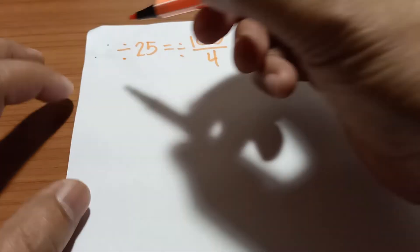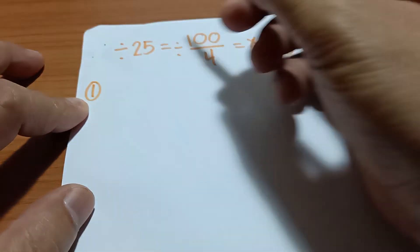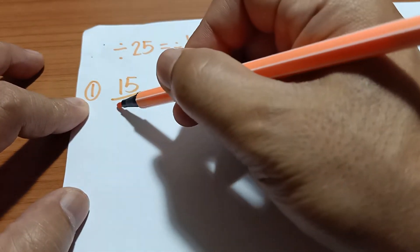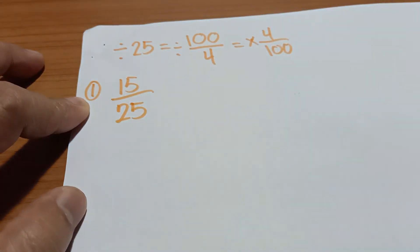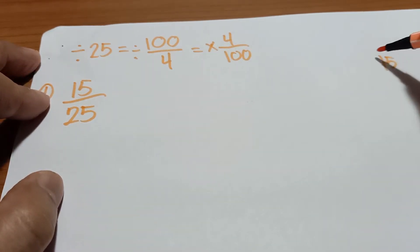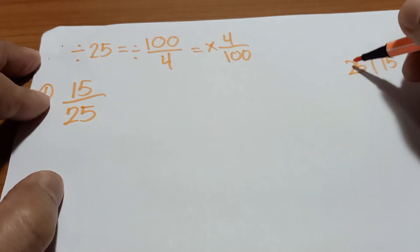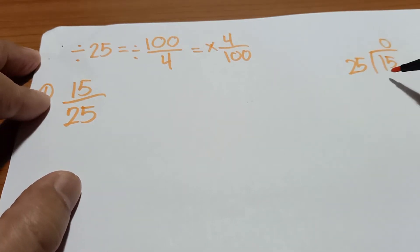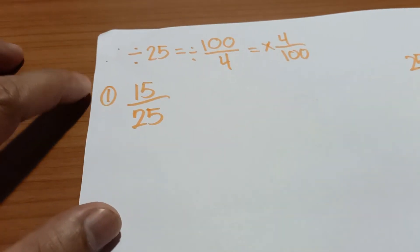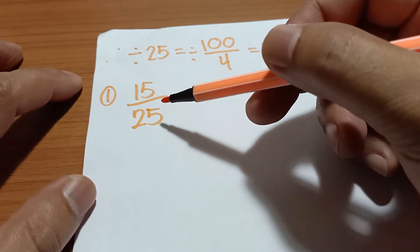For example, example number 1: if you have 15 over 25. In a traditional way, you're going to do this way. So 15 divided by 25, and then you got 0 here and 0 here and 15 add 0 on the right and bring down 0. So it takes a long time. But in division by 25, we just simply multiply it by 4.